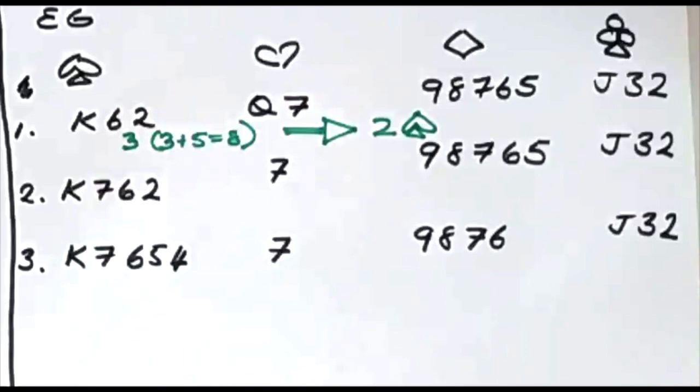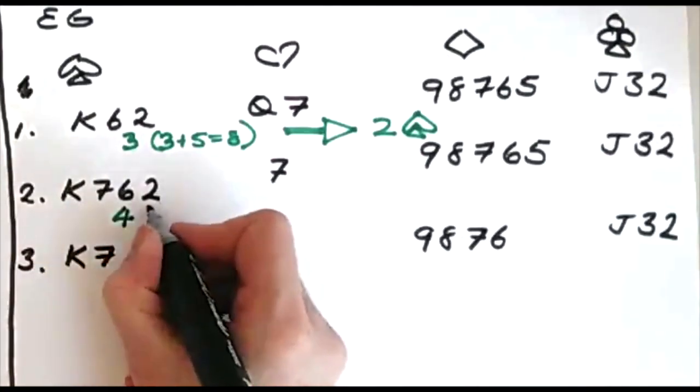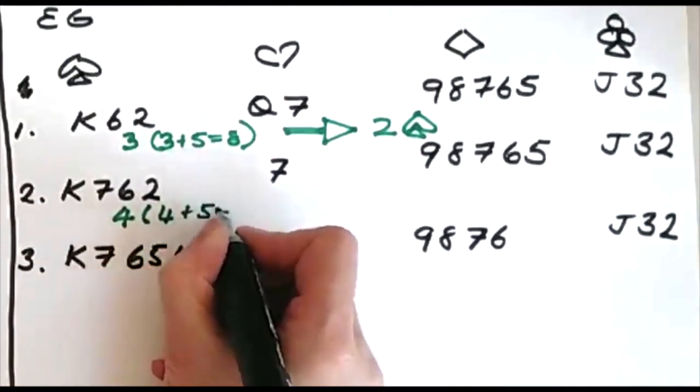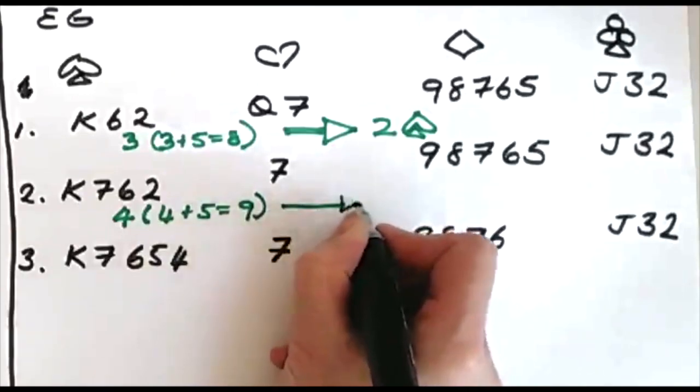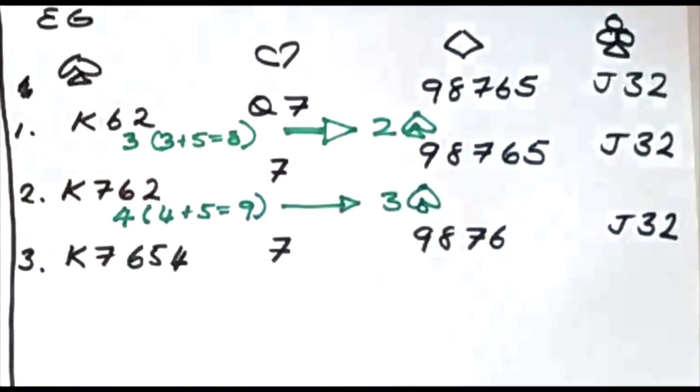In this next example, you also know that you have a fit. You've now got four in your partner's suit. Four plus five is nine. Nine is the equivalent of the three level, so you bid three spades.